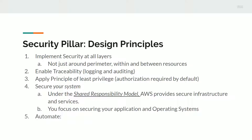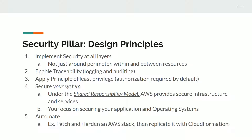The fifth principle, a motif throughout your AWS journey, is to automate. An example would be going through all the steps of hardening and patching a particular stack — including your VPC, EC2, and storage — getting all permissions set and secured. You can then automate it with infrastructure as code using CloudFormation, which allows you to easily replicate AWS stacks.